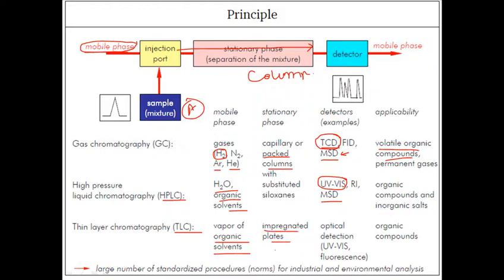As a stationary phase we use impregnated plates made up of silica. We have silica plates with silica layering, and using this plate the whole system runs. There is not actually a separated column for thin layer chromatography; we use plates.